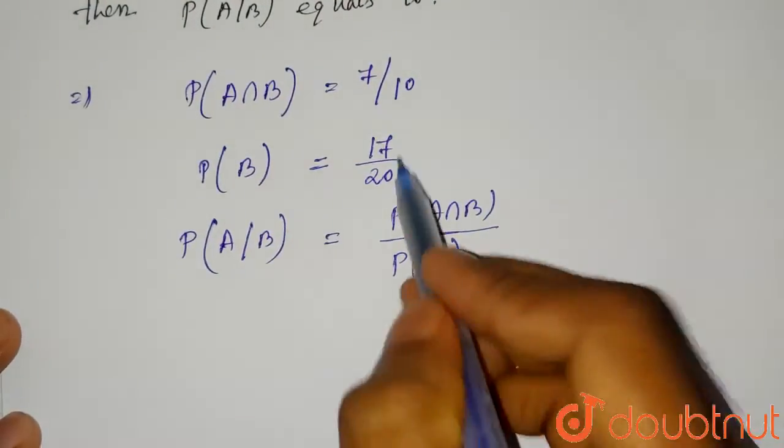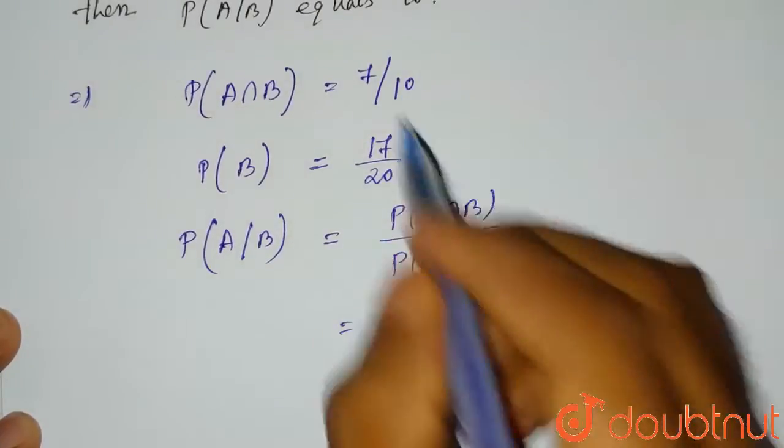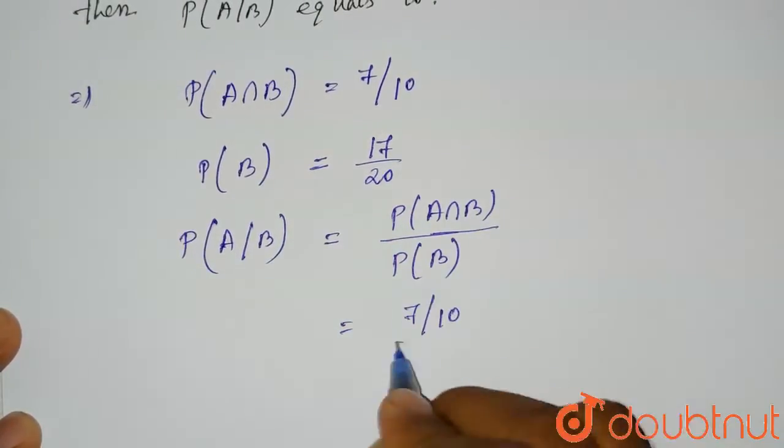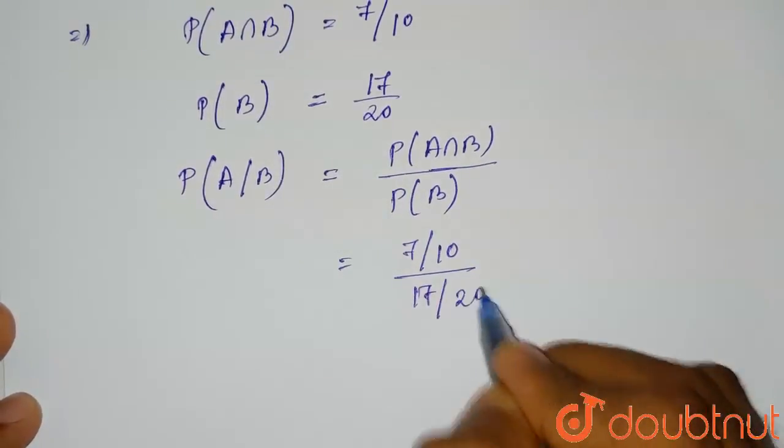Now what we will do, we will just substitute the values here. So in place of P of A intersection B, you can write 7 divided by 10, whole divided by, for P of B it is 17 divided by 20.